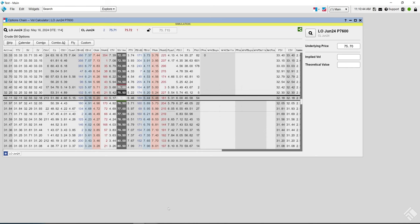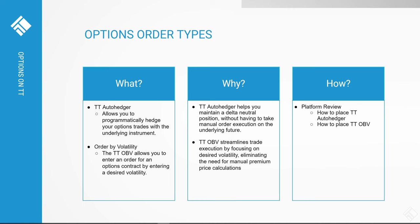Next, we're going to move on to the TT options order types and demonstrate those. We'll speak on the TT options order types: TT Auto Hedger and TT Order by Volatility, which are synthetic orders that manage the submission and execution of other orders in the market. These are enabled at the account level and are part of the Advanced Options Package.